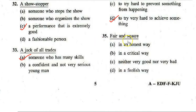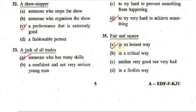Next idiom: 'Fair and square.' Options: A. In an honest way, B. In a critical way, C. Either very good or not very bad, D. In a foolish way. The correct answer is A — 'fair and square' means in an honest way.